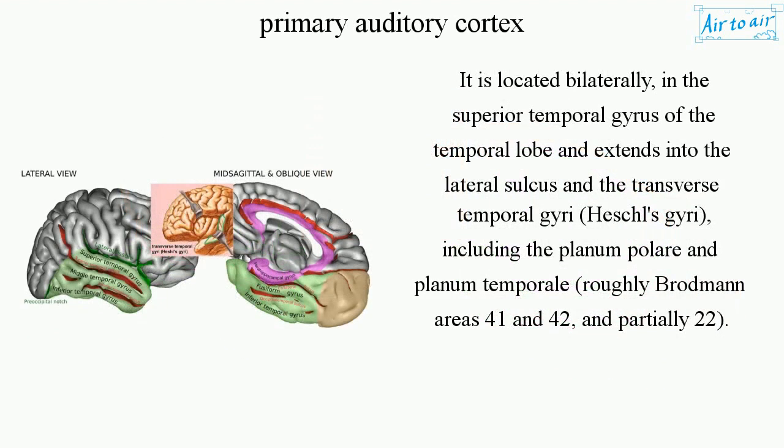It is located bilaterally in the superior temporal gyrus of the temporal lobe and extends into the lateral sulcus in the transverse temporal gyri, Heschl's gyri, including the plenum polar and plenum temporal, roughly Brodmann areas 41 and 42, and partially 22.